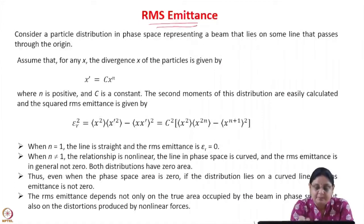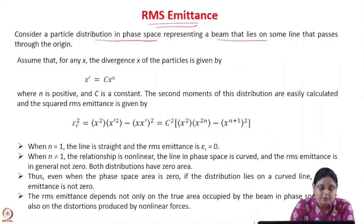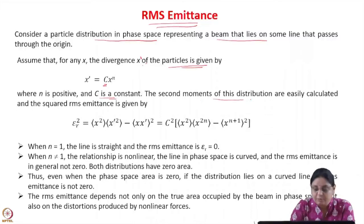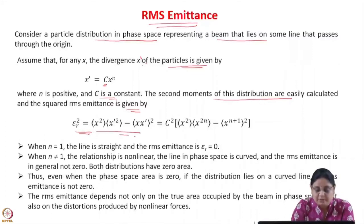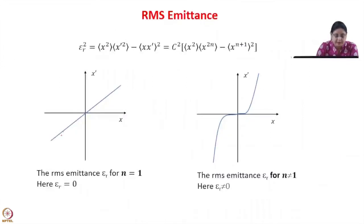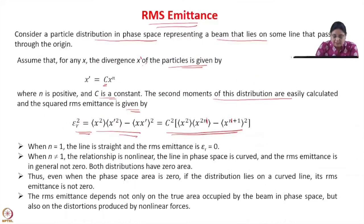Let us see the importance of RMS emittance. Consider a particle distribution in phase space representing a beam that lies on some line passing through the origin. For any x, the divergence x-prime of the particle is given as x-prime equals some constant c times x to the power of n, where n is a positive number and c is a constant. The second moments of this distribution can easily be calculated. The squared RMS emittance is calculated using this formula. When n equals 1, the line is straight and the RMS emittance becomes 0, as the two terms are equal.